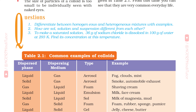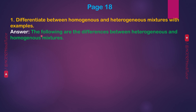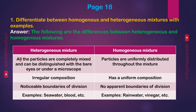Page 18, Question 1: Differentiate between homogeneous and heterogeneous mixtures with examples. Answer — Heterogeneous mixtures: all particles are completely mixed and can be distinguished with bare eyes or under a microscope; irregular composition; noticeable boundaries of division. Examples: sea water, blood, etc. Homogeneous mixtures: particles uniformly distributed; uniform composition; no apparent boundaries of division. Examples: rain water, vinegar, etc.